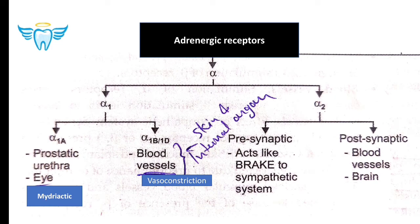First we will study the alpha receptors — where they are present — and then the classification of alpha blockers. Alpha receptors are divided into alpha-1 and alpha-2. Alpha-1 is present in the prostatic urethra, and specifically alpha-1b is present on blood vessels. The sympathetic system causes vasoconstriction via this receptor and has miotic action in the eye. Alpha blockers will have the exactly opposite effect — vasodilatation and miosis.